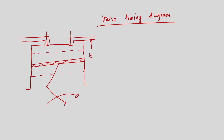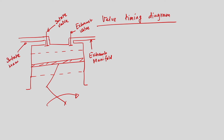This is the exhaust manifold, this is the exhaust valve, this is the intake valve, and this is the intake manifold. If it is a four-stroke SI engine, this is the carburetor, which is used to supply a homogeneous mixture of air and fuel into the cylinder. So this is the air plus fuel mixture.